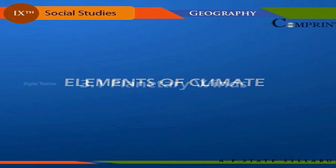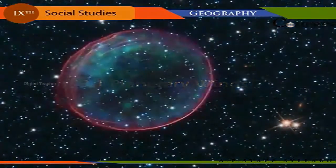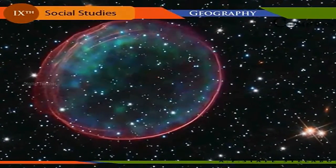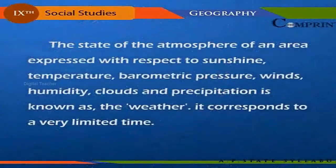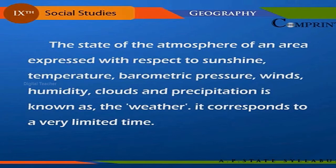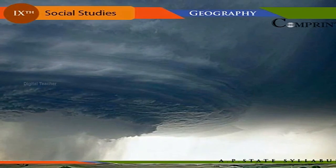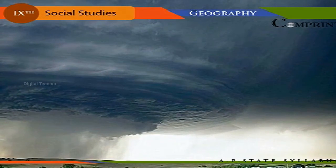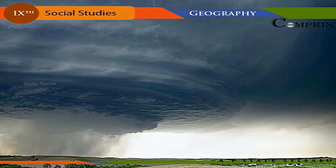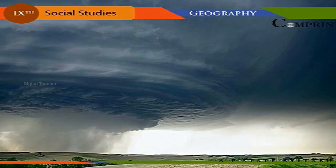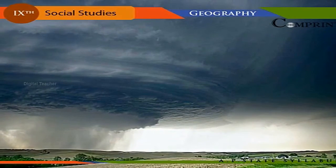The atmosphere is the gaseous envelope surrounding the earth's surface. The state of the atmosphere of an area, expressed with respect to sunshine, temperature, barometric pressure, winds, humidity, clouds, and precipitation, is known as the weather. It corresponds to a very limited time. The atmospheric variables that express either the weather or the climate of an area are called the elements of weather and climate.